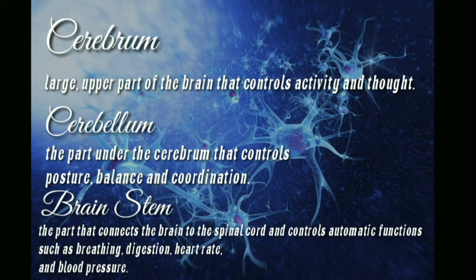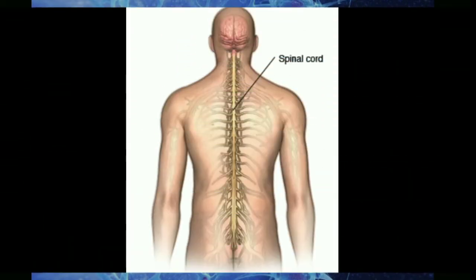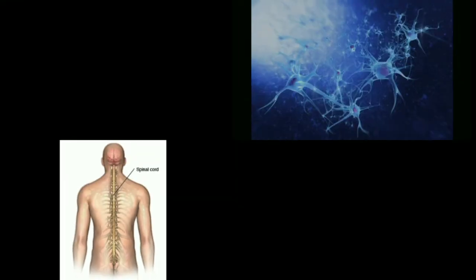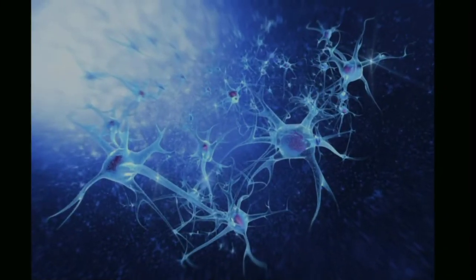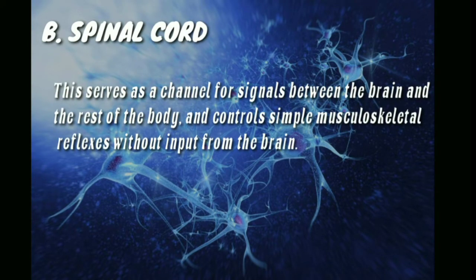The second main component of the CNS is the spinal cord. The spinal cord serves as a channel for signals between the brain and the rest of the body, and controls simple musculoskeletal reflexes without input from the brain.